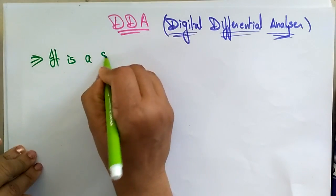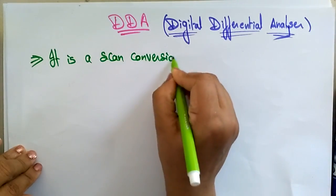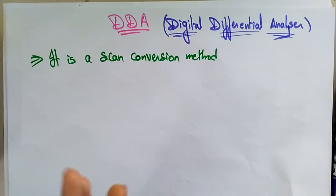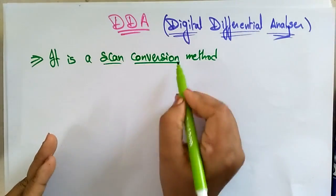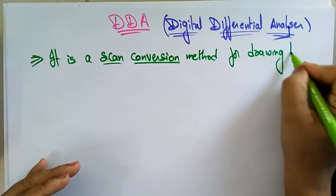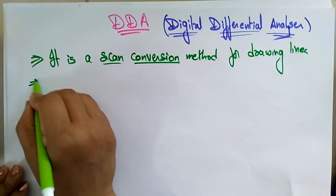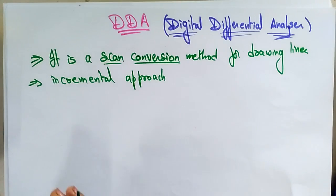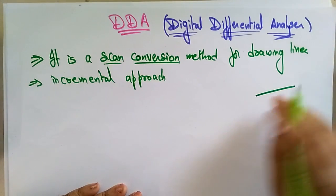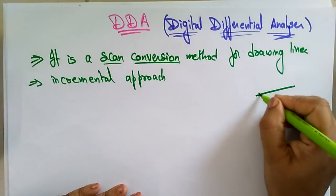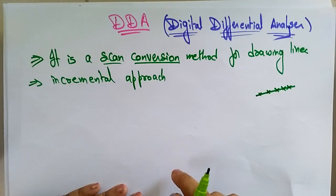The DDA is a scan conversion method for drawing lines, and it follows an incremental approach. Using the incremental approach means the line can be incremented by using the previous coordinates. If you want to draw a line, you need all the points on that line — those are the floating points that you require.